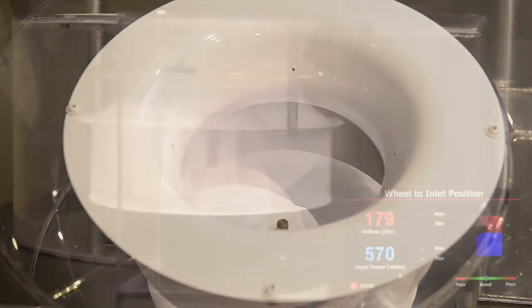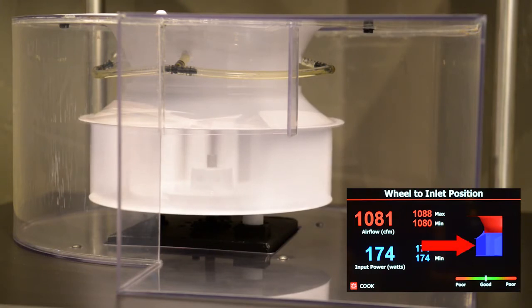We start out with the wheel in the ideal position, overlapping the inlet as detailed in the installation and operation manual. During this demonstration, the wheel speed will remain constant. The display screen shows the wheel in blue and the overlapping inlet in red. You can see the airflow is approximately 1080 CFM and the power consumption is 174 watts.